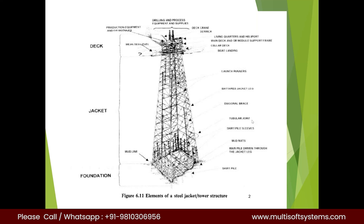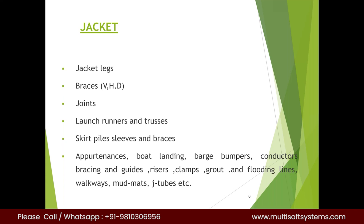The supply crane is designed for handling two to five tons of cargo lifted from sea level up to the top. Other production equipment and miscellaneous loads sit on top of the top side. In summary, a jacket has jacket legs, braces, tubular joints, launch runners, thrusters, and skirt piles. All other items — boat landing, conductors, and similar components — are collectively called appurtenances.